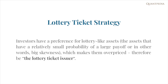There is strong evidence that investors have a preference for lottery-like assets, which are assets that have a relatively small probability of a large payoff — or in other words, big skewness. Therefore, it should be profitable not to play the lottery, but rather to be the lottery ticket issuer. We can achieve that by shorting the commodities with high skewness and going long on commodities with low skewness.